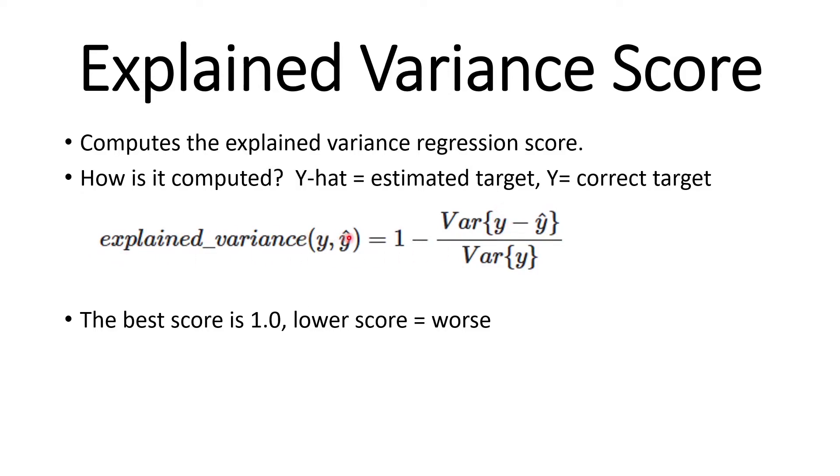So the explained variance is 1 minus the variance of the correct value minus the predicted value divided by the correct value. The best score you can possibly get is 1 and a lower score is worse. So a score of 0.8 is better than a score of 0.6.